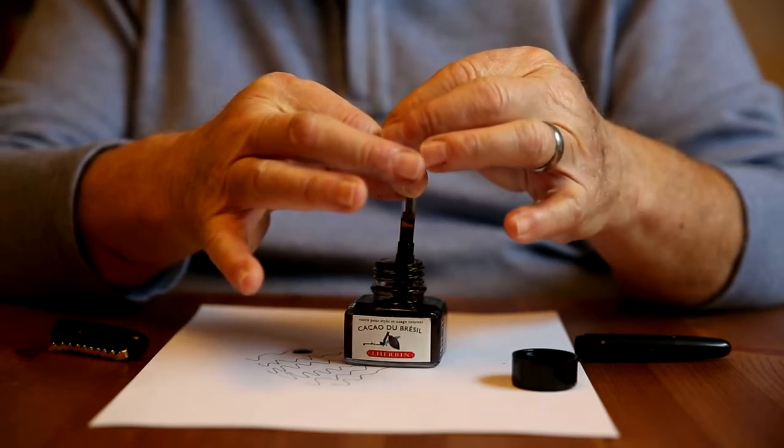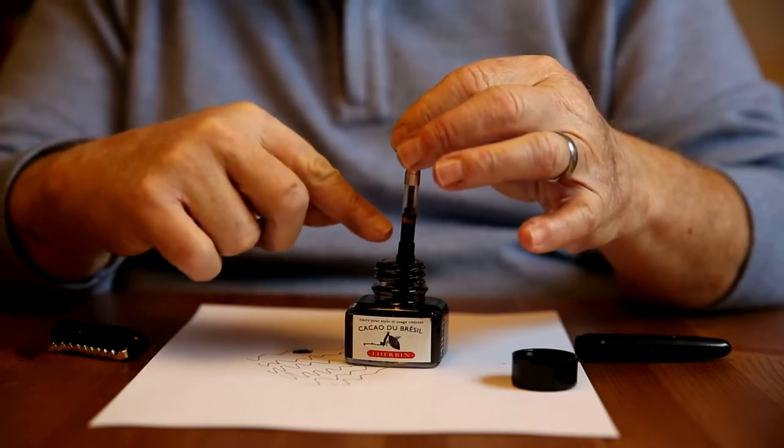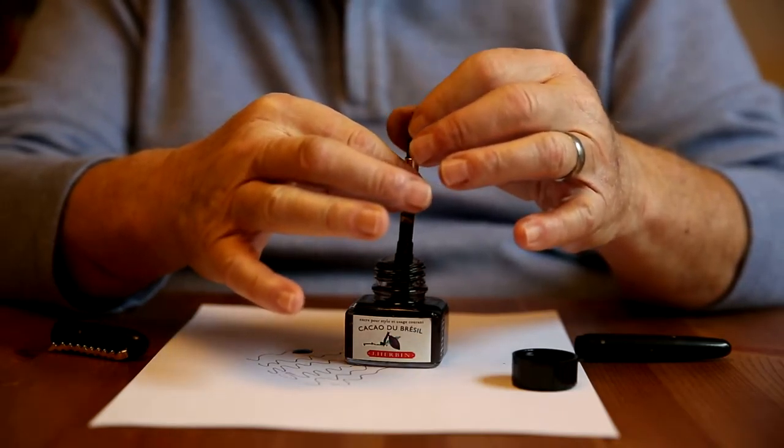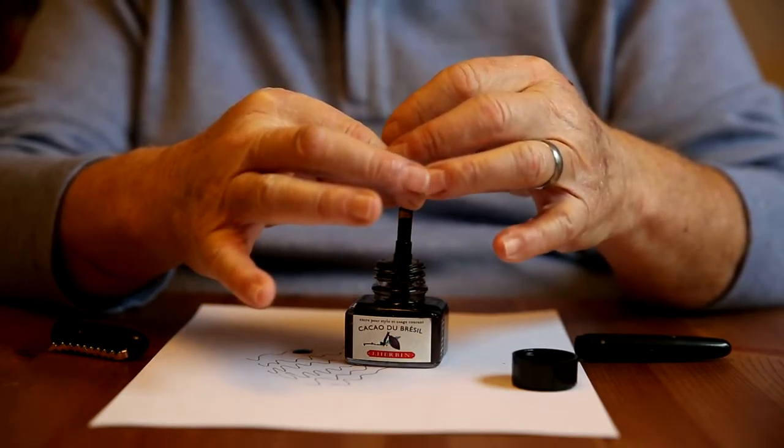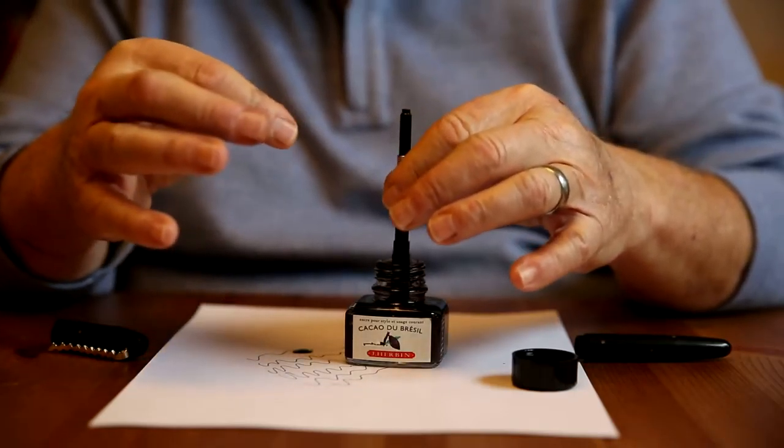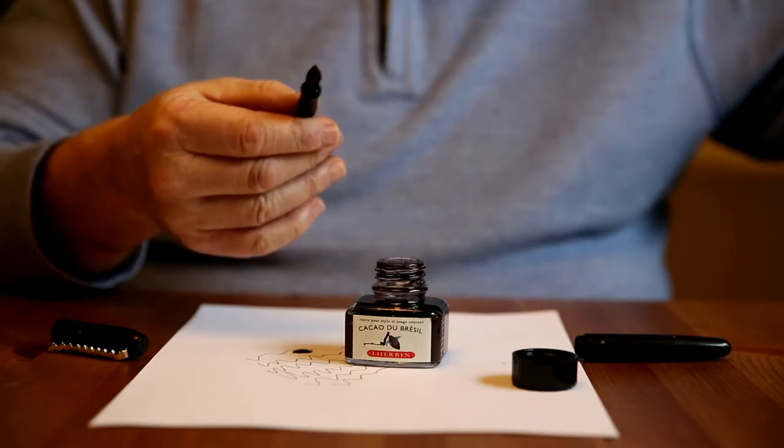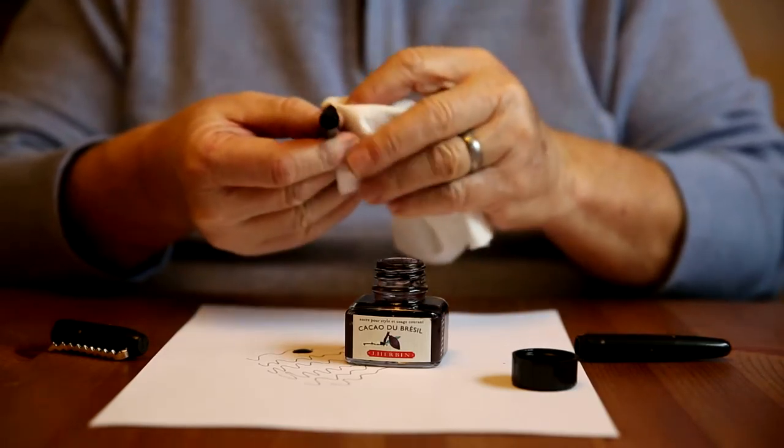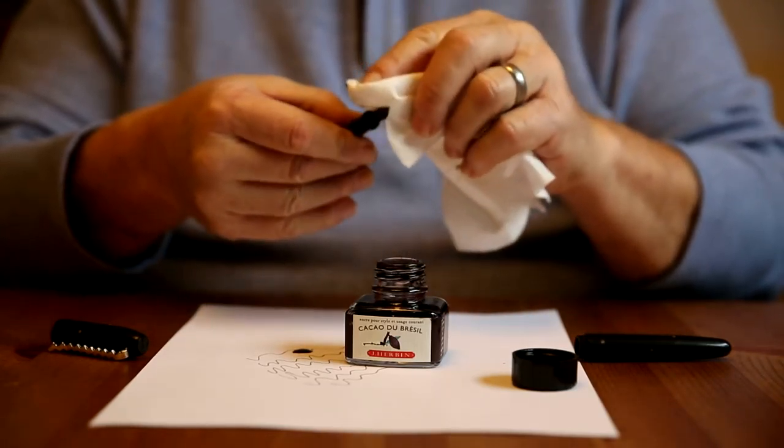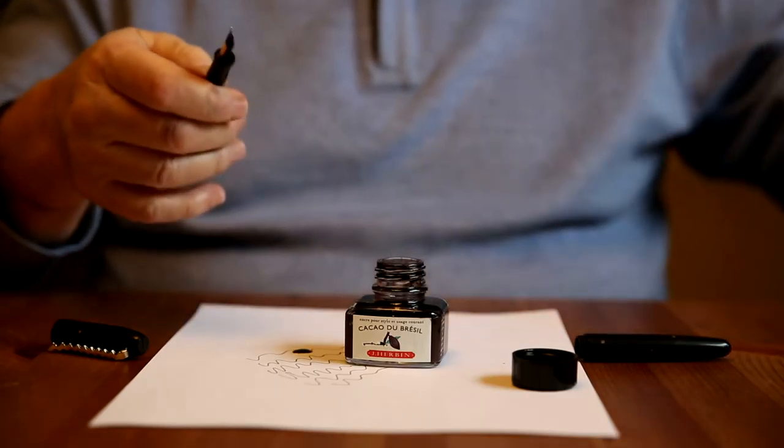The slower you turn it, the more ink will be drawn into the reservoir through the nib and through the feed. Once you have ink in the reservoir, simply take a paper towel or tissue and wipe the end of the section and your nib to clean it off.